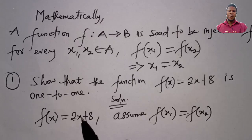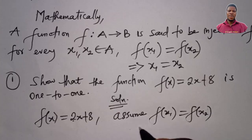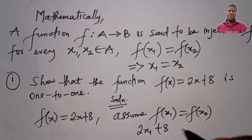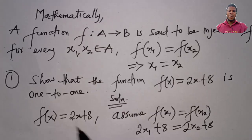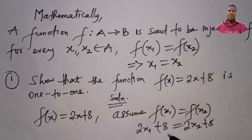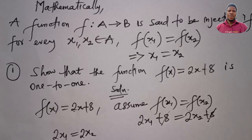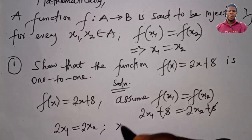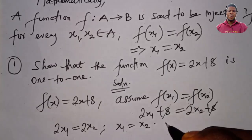Replacing x with x1 gives f(x1) = 2x1 + 8, and replacing x with x2 gives f(x2) = 2x2 + 8. Collecting like terms, the 8s cancel, leaving 2x1 = 2x2. Dividing both sides by 2 gives x1 = x2. The condition is satisfied, so this function is indeed injective.